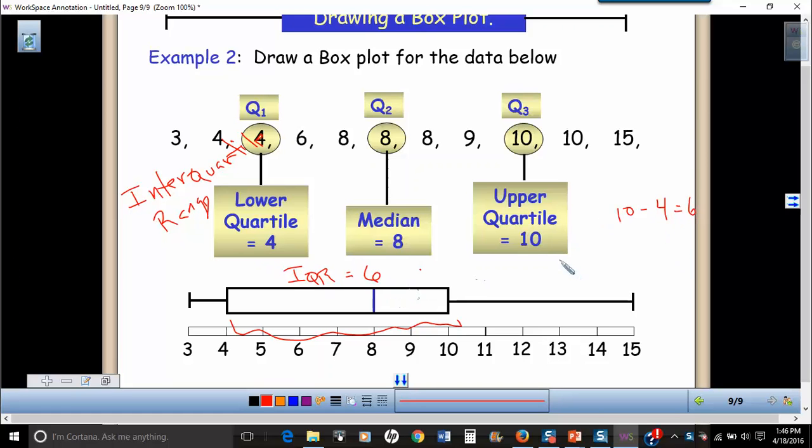So the regular range would be 15 minus three, but the interquartile range, we're just looking at the middle 50%. So 10 minus four. So this value just tells you how does the middle 50% of the values vary from one another. It's just another way to measure variability.